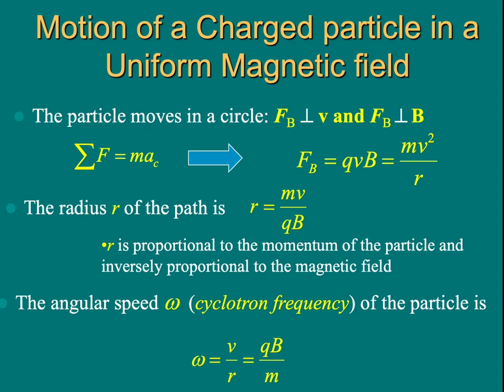We can also define the angular speed of the particle, which is also called cyclotron frequency, which is v over R. This omega equals v over R equals Q times B divided by m.